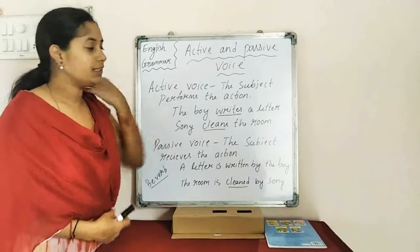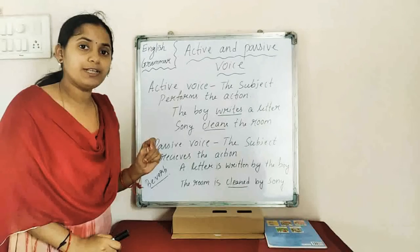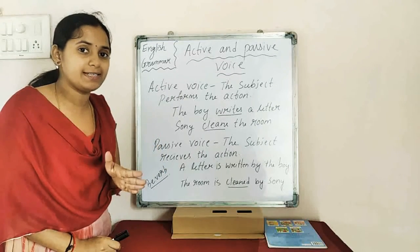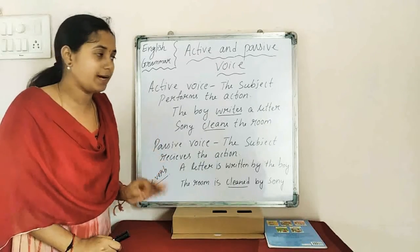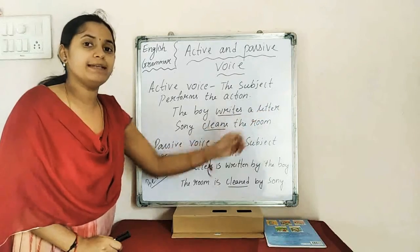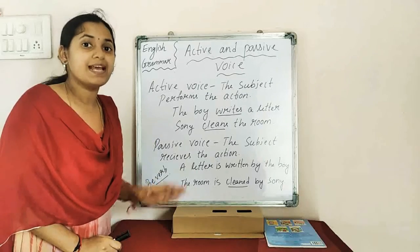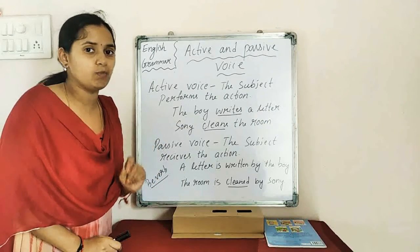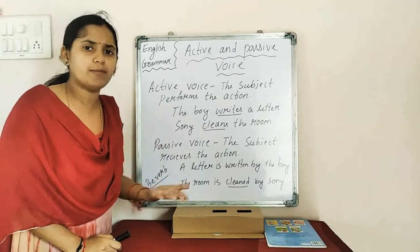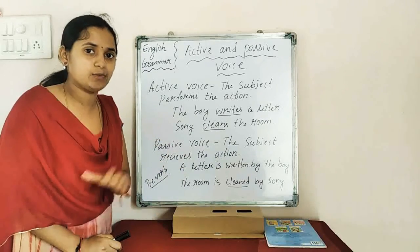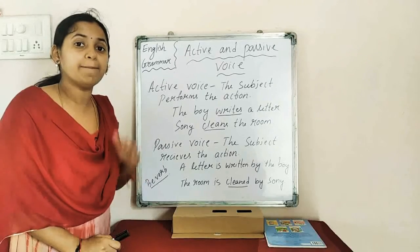Here you can see that the boy is the subject. Writes is the action — the verb 'writes' is in the VS form. A letter is the object. So in the sentence 'The boy writes a letter,' this is in the present tense and we are saying this is in the active voice. Why? Because the subject is performing the action — the subject is active. That's why we say this is the active voice. Something is done by the subject.